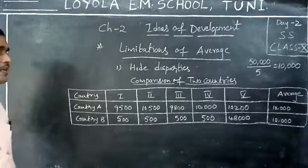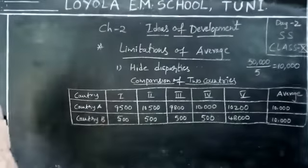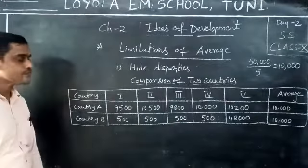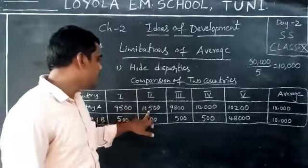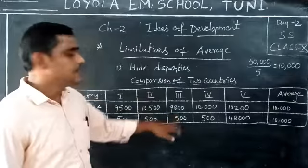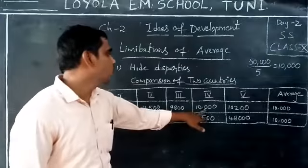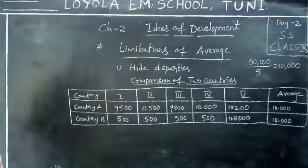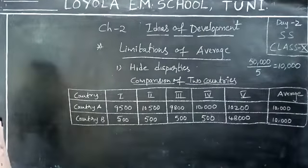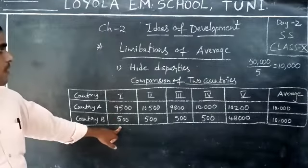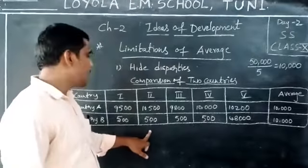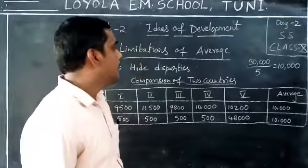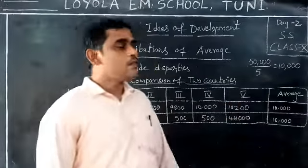In Country A, five people are living. Their per capita incomes are: first person 9,500; second person 10,500; third person 9,800; fourth person 10,000; and fifth person 10,200. In Country B, five people are also living. Their incomes are: first person 500; second person 500; third person 500; fourth person 500; and fifth person 48,000.